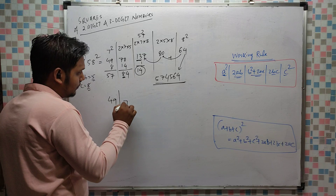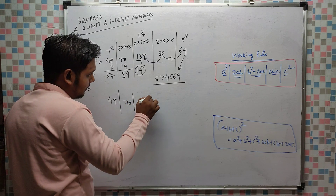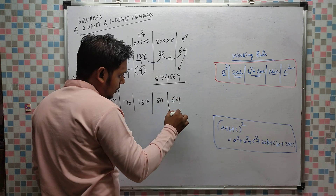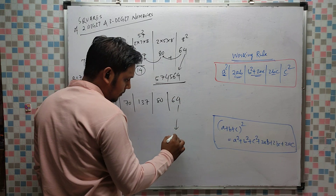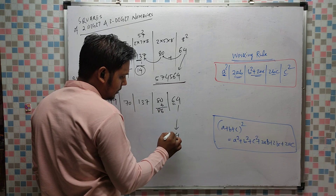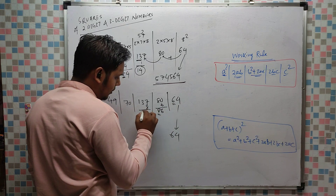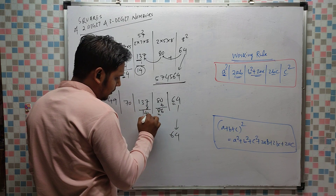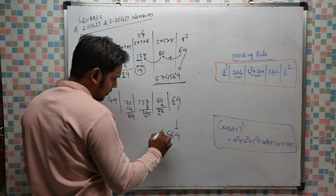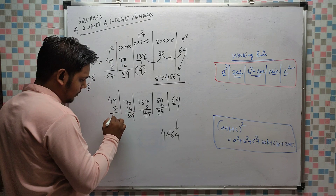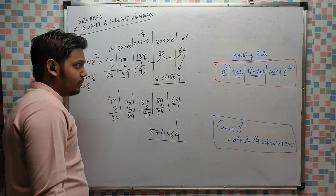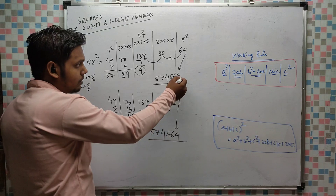To confirm 758² by carrying through: 49, 70, 137, 80, 64. Drop 4; 86 → write 6, carry 8; 145 → write 5, carry 14; 84 → write 4, carry 8; then 57. Reading the carried digits: 5, 7, 4, 5, 6, 4. Answer confirmed: 574564.